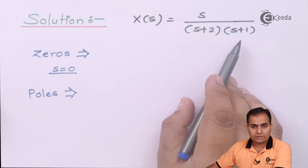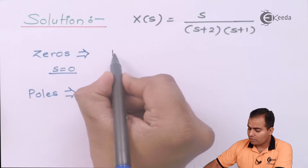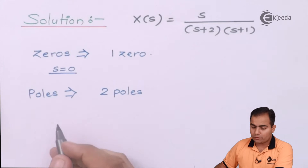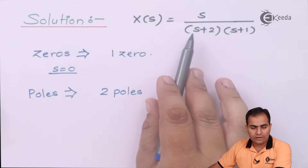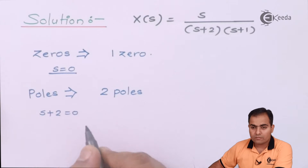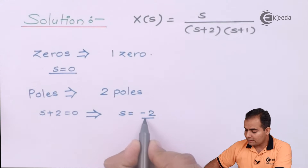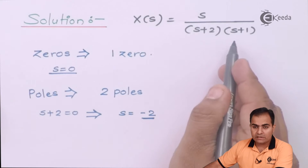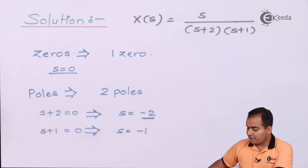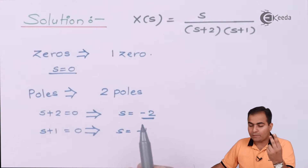Now moving on to poles — we have two roots in the denominator, which means we have two poles. To find their locations, equate each denominator root to zero. Setting S+2 = 0 gives S = -2, which is the location of the first pole. Similarly, setting S+1 = 0 gives S = -1, which is the location of the second pole. So we have two poles: one at -1 and one at -2.